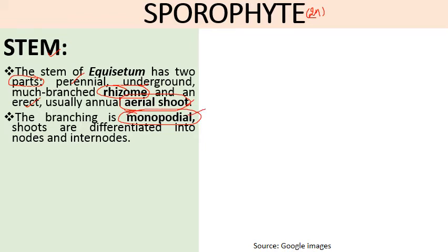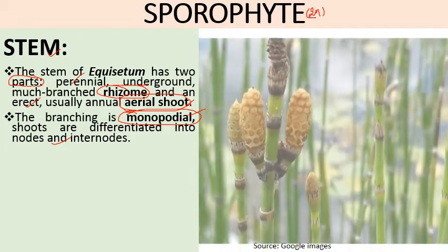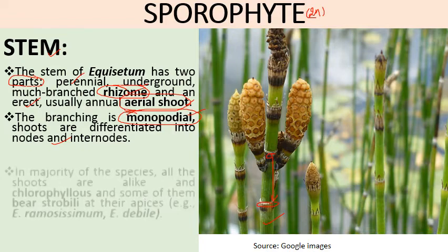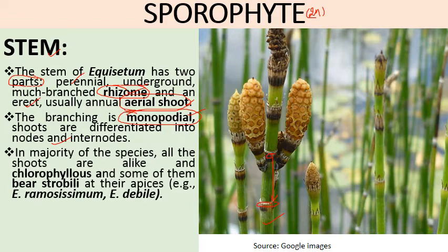In the majority of species all shoots are alike, chlorophyllous, and help in photosynthesis. Some of them bear strobili at their apex — for example in Equisetum ramosissimum and Equisetum debile. Sometimes shoots show dimorphism, meaning the vegetative shoot is separate from the fertile shoot — two types: vegetative and fertile. For example, Equisetum arvense shows dimorphism.